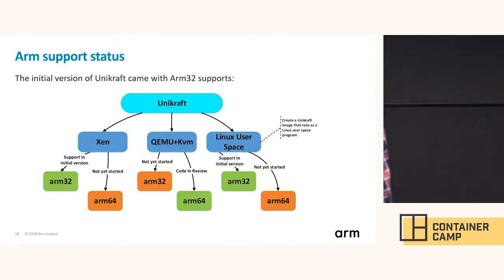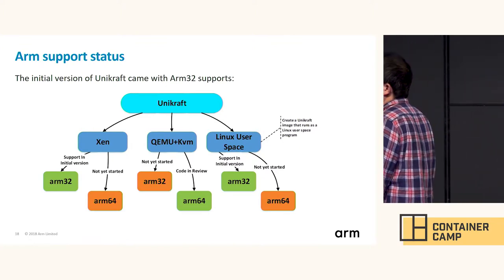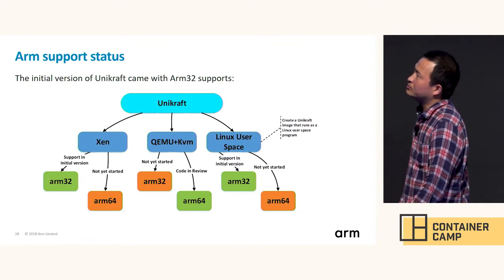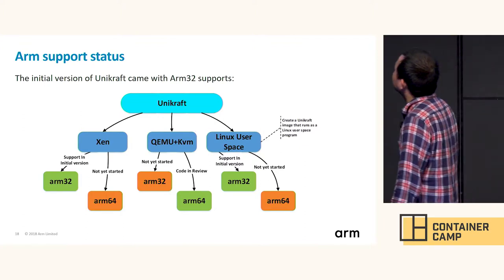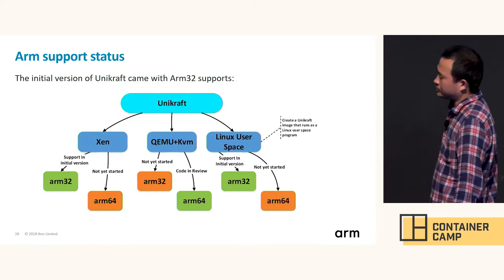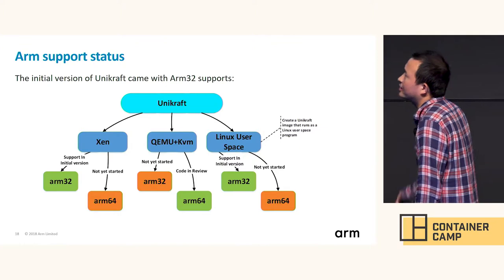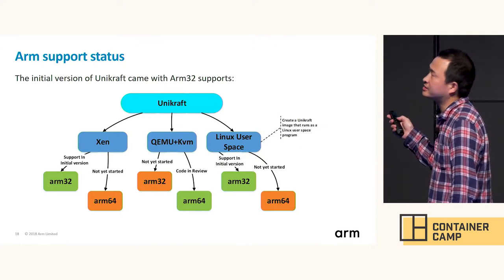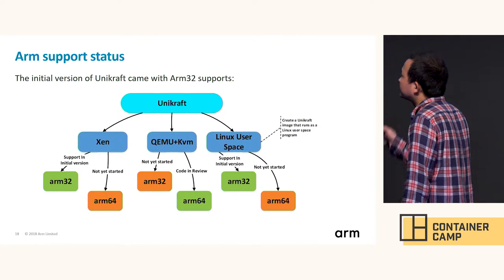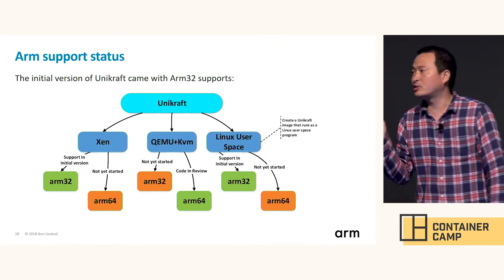Here is the ARM support status. UniKraft comes with native ARM32 support on Xen and Linux user-space. Another architecture supported by UniKraft is 64-bit x86. After discussing with the community, we have taken charge of ARM support for UniKraft.